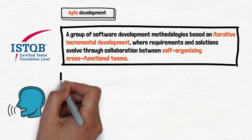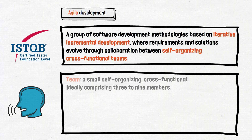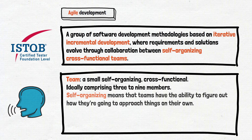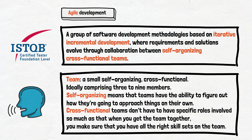In this video we'll consider what agile methodologies have in common. Let's start with the team: a small, self-organizing, cross-functional team, ideally comprising three to nine members. These words — self-organized and cross-functional — bring a lot of confusion. Self-organizing means the team has the ability to figure out how they are going to approach things on their own. Cross-functional means that when you get the team together, you make sure that you have all the right skill sets on the team.